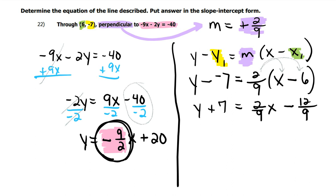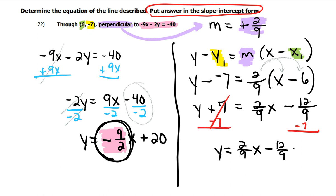And now I have to finish. It says put the answer in slope intercept form. So I have to subtract 7 on both sides. And so I get y is equal to 2 9ths x minus. Let's see. I don't like to use my calculator. So minus 12 9ths minus 7.